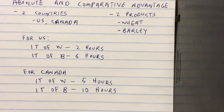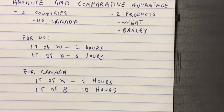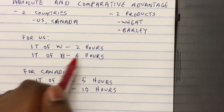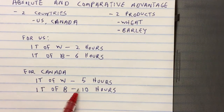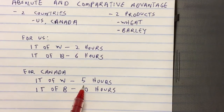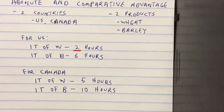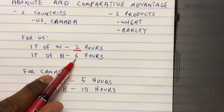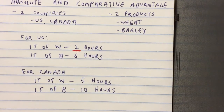Now we want to know which country has an absolute advantage in the production of wheat and barley, and which country has a comparative advantage. The US requires just two hours to produce one ton of wheat compared to Canada's five hours. For barley, the US also requires fewer hours compared to Canada to produce the same ton of barley.